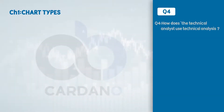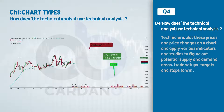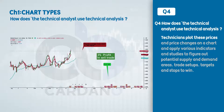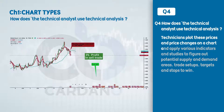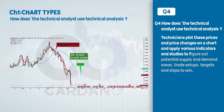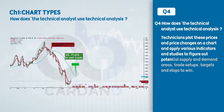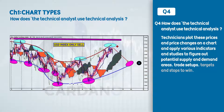The fourth question is: how does the technical analyst use technical analysis? The answer is: technicians plot these prices and price changes on a chart and apply various indicators and studies to figure out potential supply and demand areas, trade setups, targets, and stops to win.